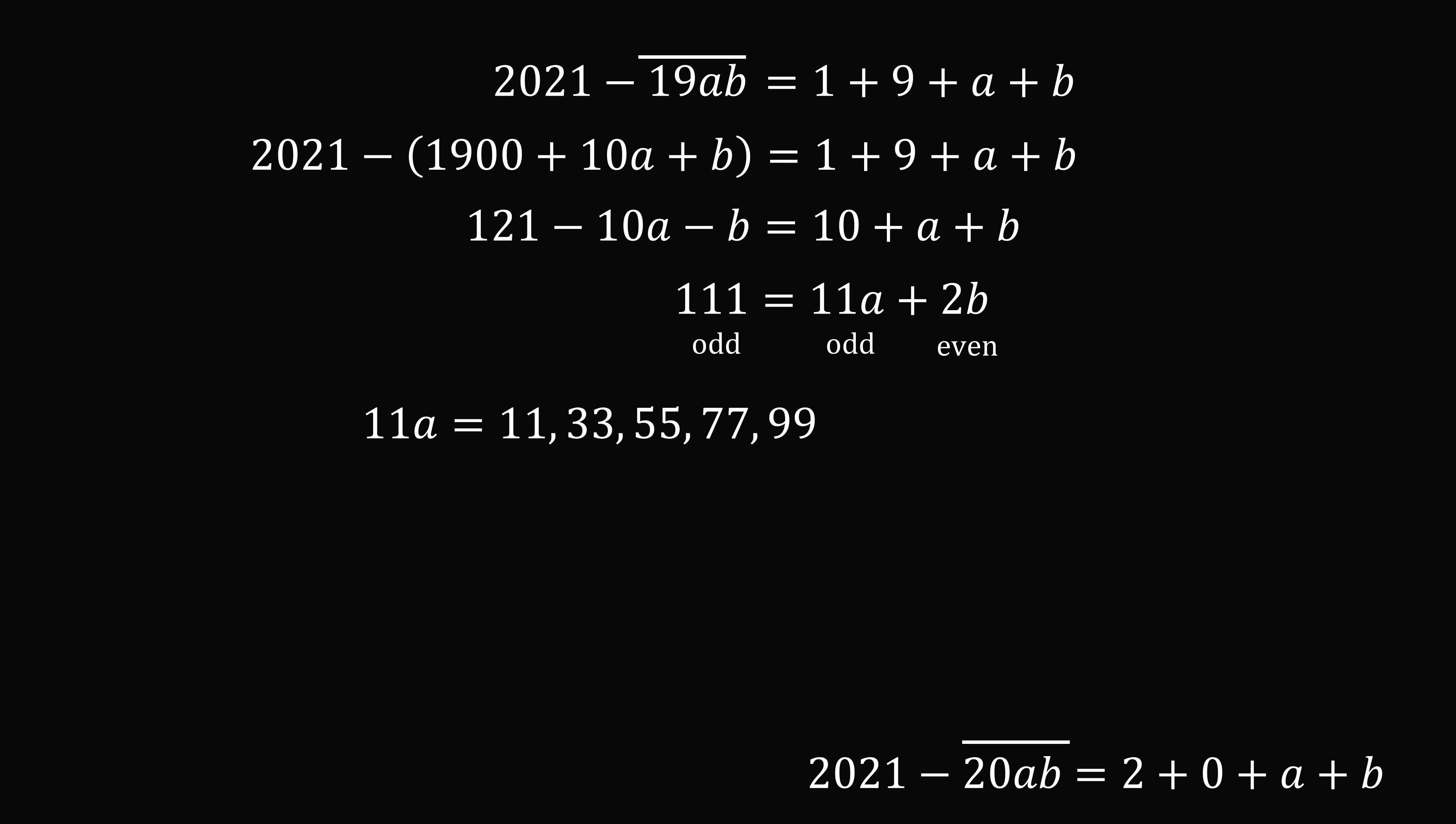Now, let's narrow down these cases. Let's consider the case that 11a is equal to 77. We would then have 111 minus 77, and that equals 34. But this needs to be equal to 2b, which means b is equal to 17. But you can't have a digit that's equal to 17. b has to at most be equal to 9. So, we know that this case cannot happen. We also know that 11a can't be equal to 55, 33, or 11, because then b would be an even larger value.